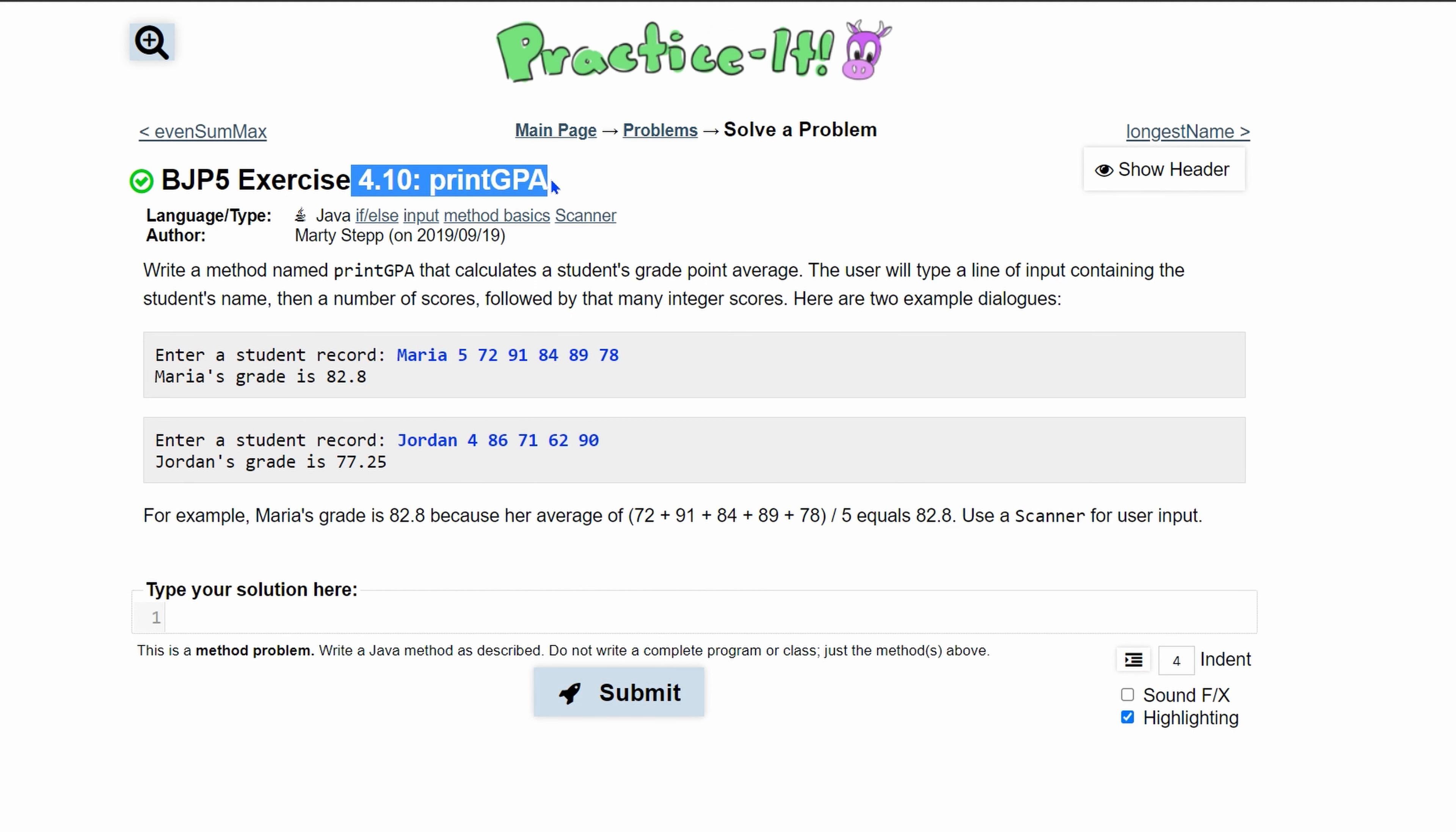Practice exercise 4.10 printGPA tells us to write a method named printGPA to calculate a student's grade point average. The user will type a line of input containing the student's name, then a number of scores, followed by that many integer scores. We have two example dialogues here. So that's a lot to do.